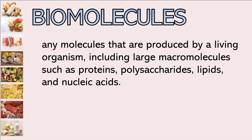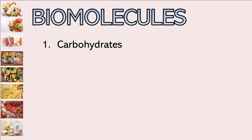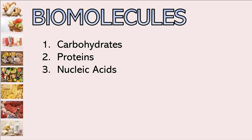There are four main types of biomolecules. First, carbohydrates; second, proteins; third, nucleic acids; and fourth, lipids. I'm sure you are already familiar with the first two — those were always explained back in elementary. The third one, nucleic acids, we have already discussed that in the third quarter. The one that might be new to you is lipids.